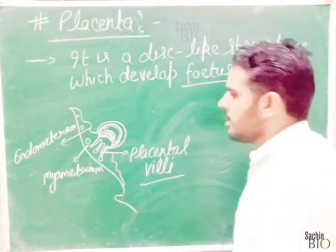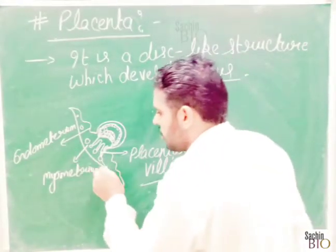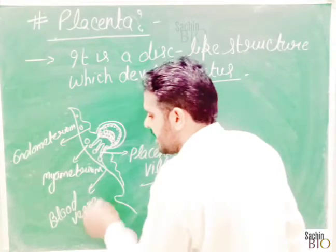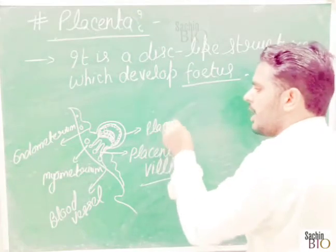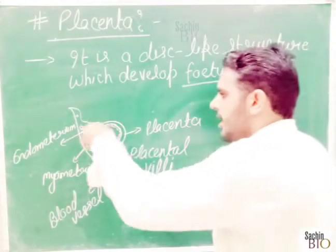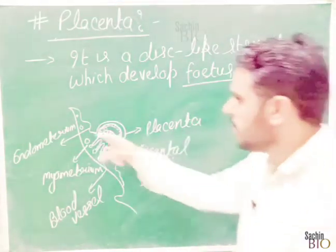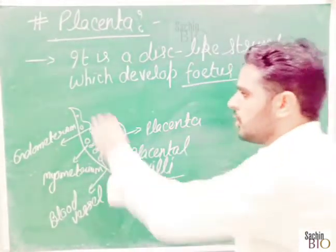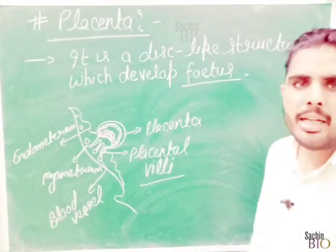These placental villi provide nutrition to the young one, the fetus. Directly, blood vessels run through here — these blood vessels directly connect and continuously take nutrition from them. The placenta develops gradually, moving toward the center, with interdigitation around it. The placental villi come around it and continuously provide nutrition. The cell mass develops into the fetus.